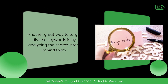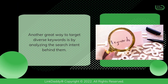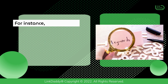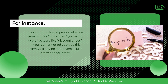Another great way to target diverse keywords is by analyzing the search intent behind them. For instance, if you want to target people who are searching for 'buy shoes,' you might use a keyword like 'discount shoes' in your content or ad copy, as this conveys a buying intent versus just informational intent.